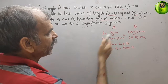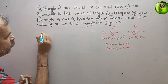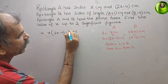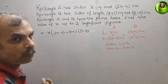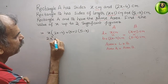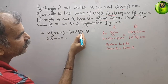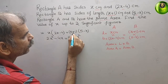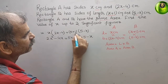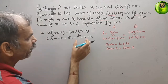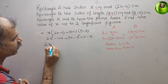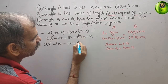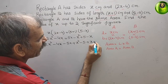Since area of A is equal to area of B, we set x into 2x minus 4 equal to x plus 1 into 5 minus x. Multiplying out, we get 2x squared minus 4x on the left. Expanding the right side gives 5x minus x squared plus 5 minus x. Bringing everything to one side, we get 2x squared minus 4x minus 5x plus x squared equals 0.